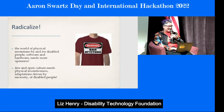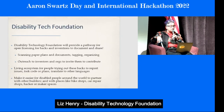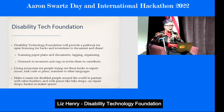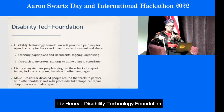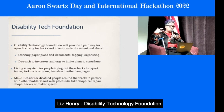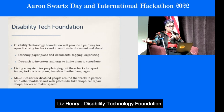The nonprofit Disability Technology Foundation will provide a pathway for open licensing for hacks and inventions — for people to document and share. Over the next year, I want to start scanning paper plans and documents from people's archives — disabled people and rehab workers who've accumulated large masses of this information. Get it online, get it scanned — and not just scanned, but really digitized to make it accessible for people with screen readers. Tagging and organizing it is crucial. I also want to do direct outreach to inventors and organizations to invite them to contribute, and help them get a license on their work and store it somewhere that will live beyond them.